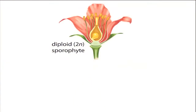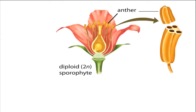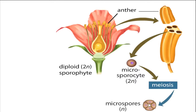Within the flower's male parts called the anthers are millions of diploid spores called microsporocytes. These microsporocytes divide by meiosis to produce haploid microspores. Meanwhile, a similar process occurs within the flower's female parts, which consist of one or more carpels.